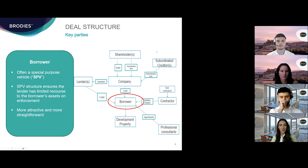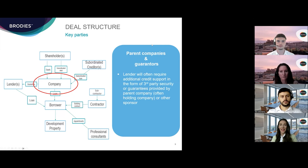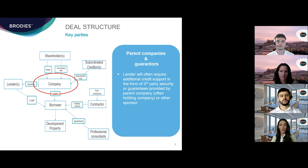It's also worth noting that in an enforcement scenario, having an SPV borrower makes it much more straightforward to step in and take over the operation of the property or, if desired, to transfer the company or property. If the borrower is an SPV with few or no assets of its own, the lender will often require additional credit support in the form of third-party security or guarantees from other group members including any parent, which is typically a holding company or sponsor.